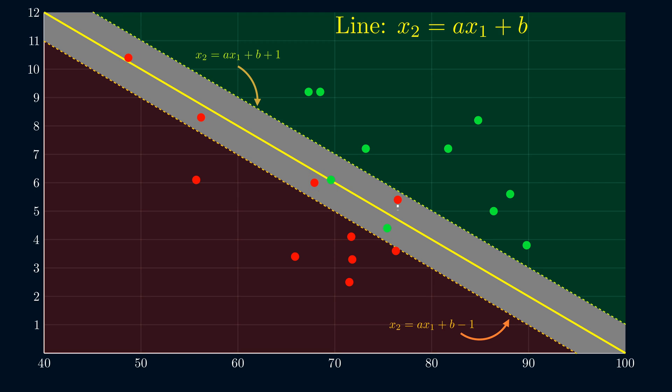And this penalty we impose is how much the point has to travel vertically until it clears the buffer and reaches its own region.